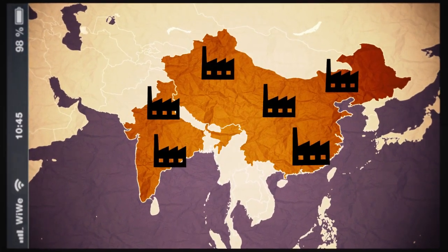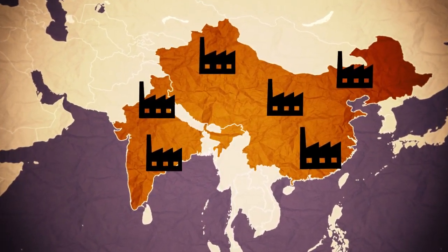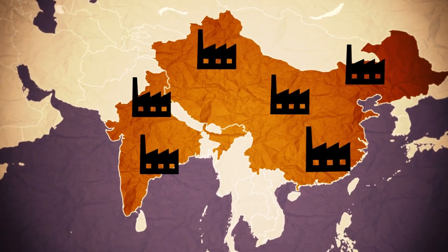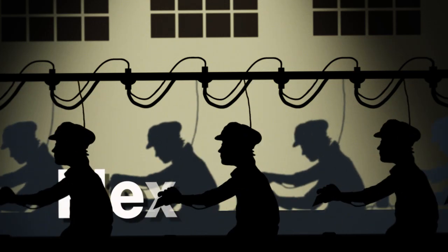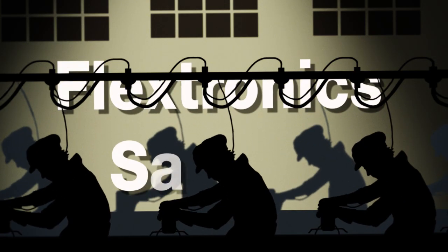The production of individual components and assembly are mostly done at factories in China and India. These factories are run by companies like Flextronics, Salcom, and Foxconn.